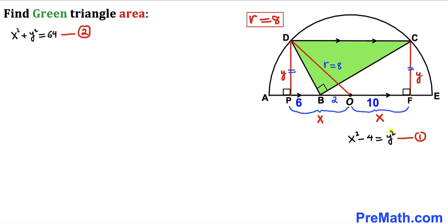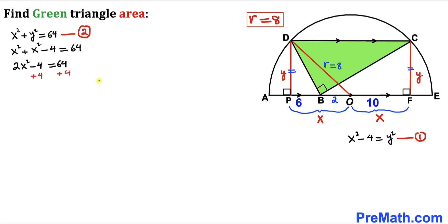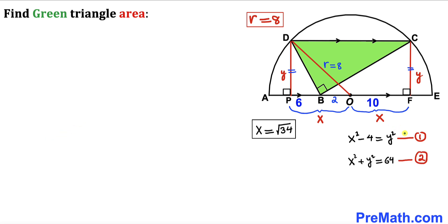From equation 1 we have y squared equals x squared minus 4. Substituting into equation 2: x squared plus (x squared minus 4) equals 64. Adding 4 to both sides: 2x squared equals 68. Dividing both sides by 2: x squared equals 34. Taking square roots on both sides, x equals the square root of 34.